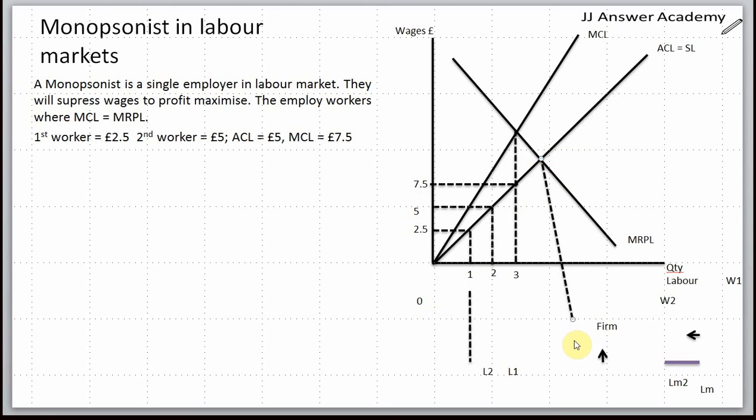Effectively, this was the market clearing employment as well as wage, and let me just put this down as W1 and LM. But the monopsonist has employed fewer workers and also suppressed the wages.